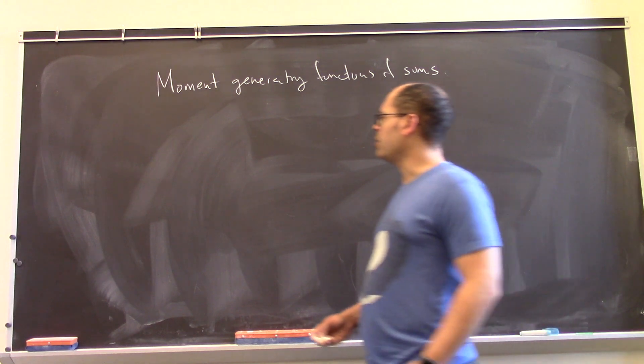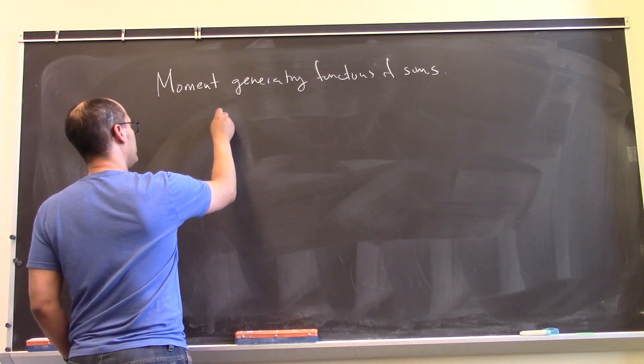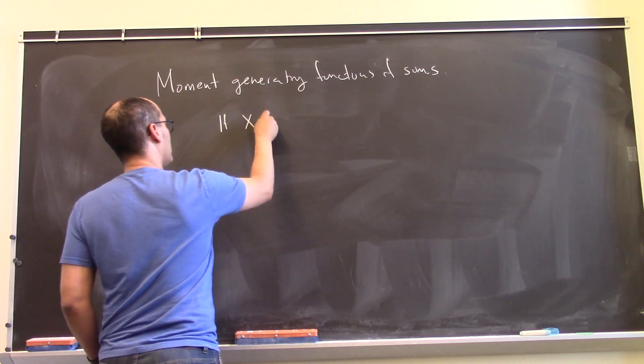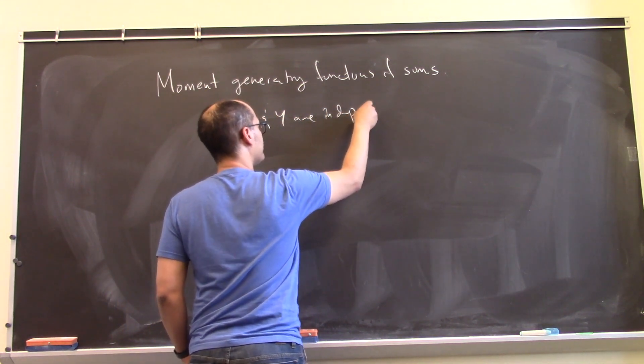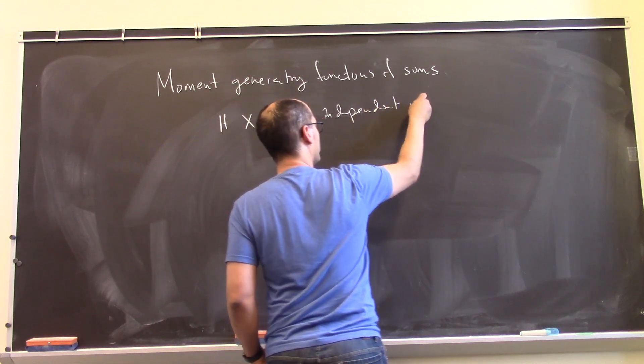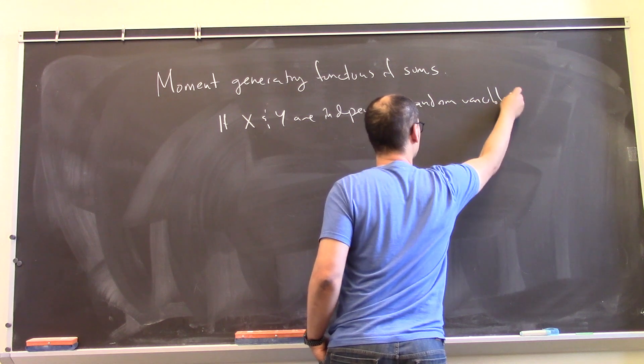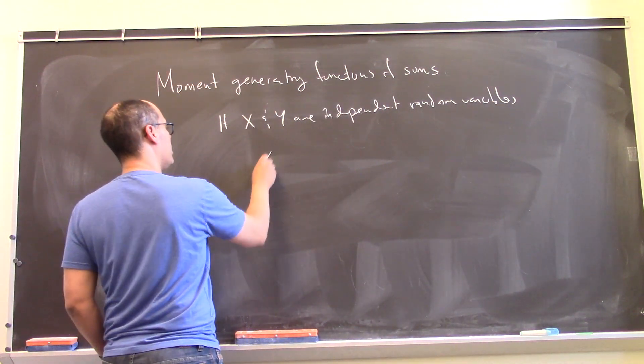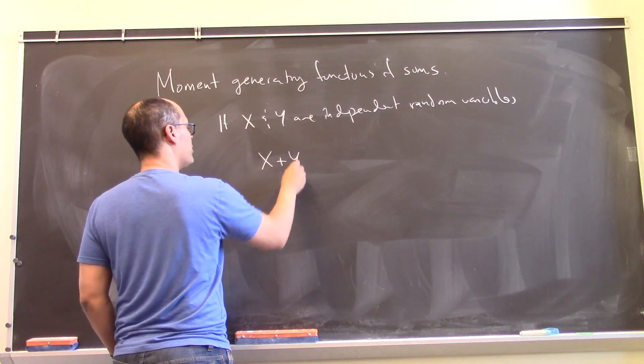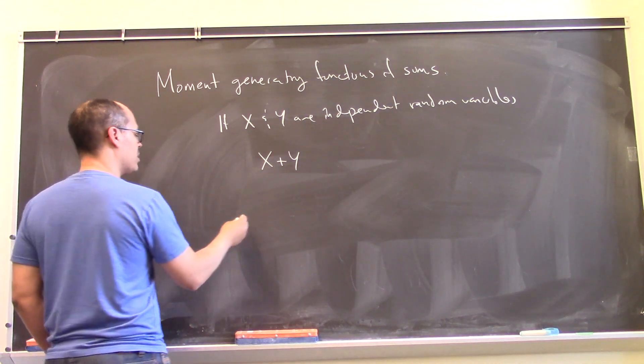So first, let me just set the stage a little bit. If x and y are independent random variables, then we can consider the sum x plus y and we can ask what is the moment generating function for x plus y look like?